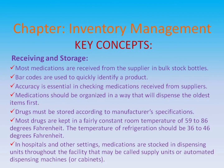Receiving and storage: most medications are received from the supplier in bulk stock bottles. Barcodes are used to quickly identify a product. Accuracy is essential in checking medications received from suppliers. Medications should be organized in a way that will dispense the oldest items first. Drugs must be stored according to manufacturer's specifications — most drugs are kept at a room temperature of 59 to 86 degrees Fahrenheit, and refrigeration should be 36 to 46 degrees Fahrenheit. In hospitals and other settings, medications are stocked in dispensing units throughout the facility, which may be called supply units, automated dispensing machines, or cabinets.